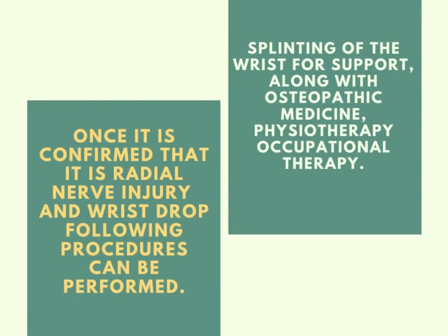Once it is confirmed that there is a radial nerve injury causing wrist drop, the following procedures can be followed: splinting of the wrist for support, along with osteopathic medicines, physiotherapy, and occupational therapy.